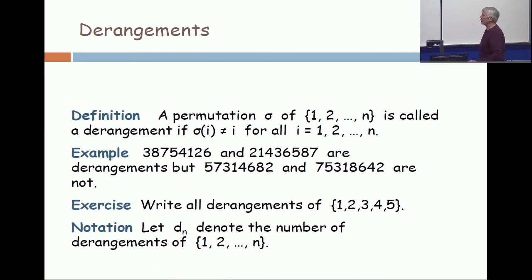Our first example is going to be something called a derangement. So we're talking about permutations, and we take a permutation of 1 to n, and it's called a derangement if the i-th position in the permutation is never i.